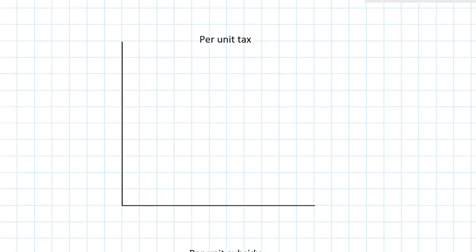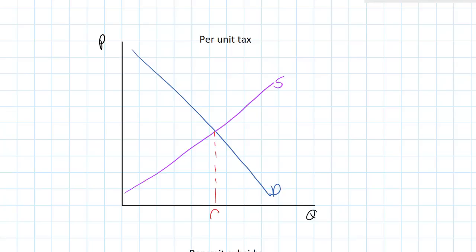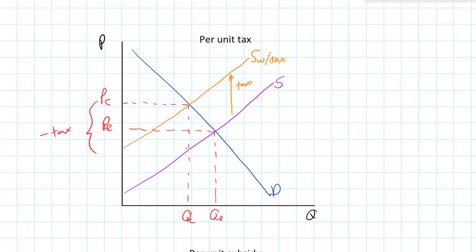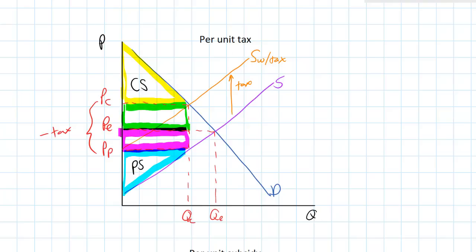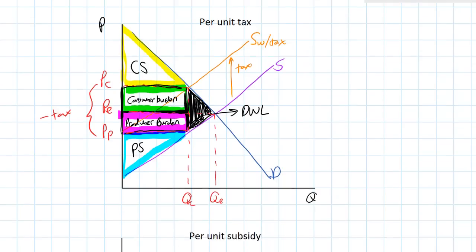Time to look at per unit taxes. A per unit tax is a determinant of supply, therefore a tax shifts the supply curve up vertically by the amount of the tax. Remember, supply also equals marginal cost. The increase in marginal cost causes a decrease in equilibrium quantity to QT, an increase in the price consumers pay to PC, and a decrease in the price that producers get to keep to PP. There's a decrease in both consumer and producer surplus. The green rectangle represents the consumer burden, the purple rectangle the producer burden, and the black rectangle the tax revenue. There is a deadweight loss as total surplus decreases.